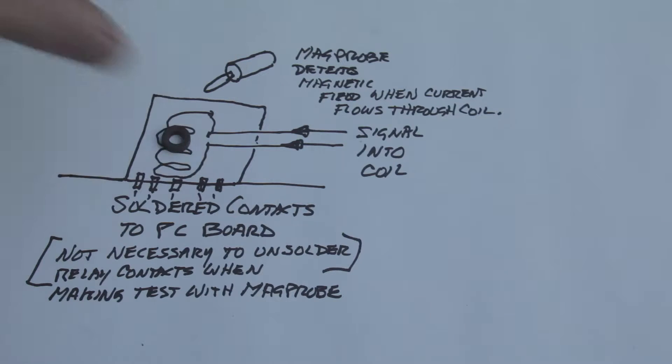So in order to make the test with a mag probe, instead of unsoldering all the contacts and pulling the relay off and going through all kinds of drastic measures, in order to do this with a mag probe you just hold the mag probe up to the coil.